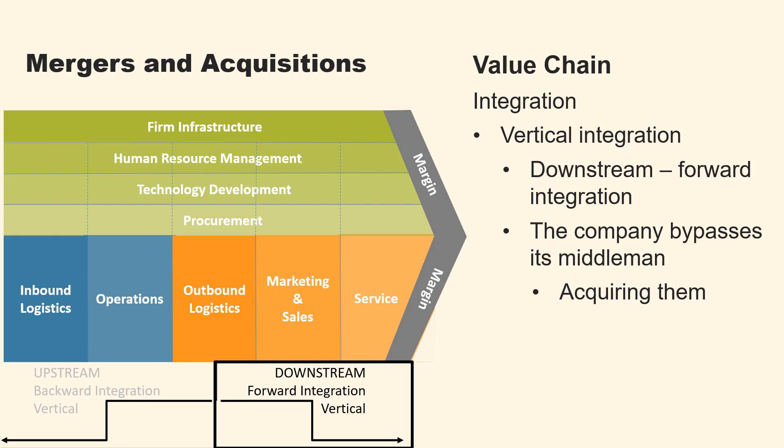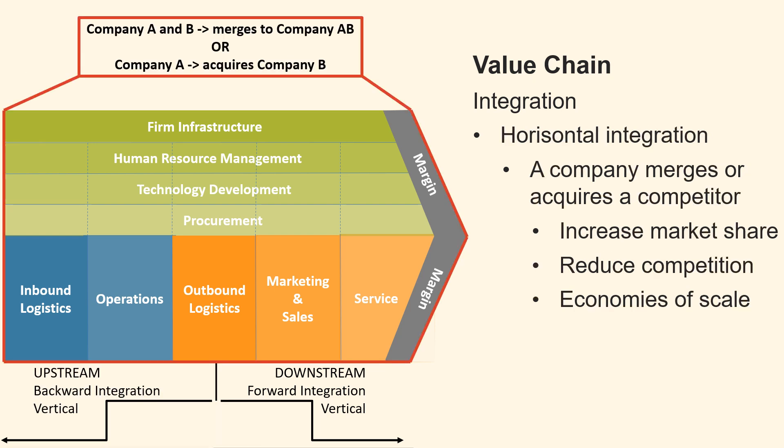Vertical integration downstream, or forward integration, occurs when a company eliminates or bypasses its middleman by acquiring them or establishing an online store directly. Horizontal integration occurs when a company merges with or acquires a competitor, leading to increased market share, reduced competition, and the creation of economies of scale.